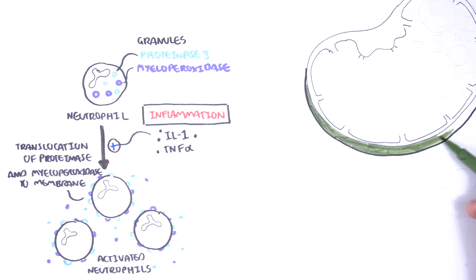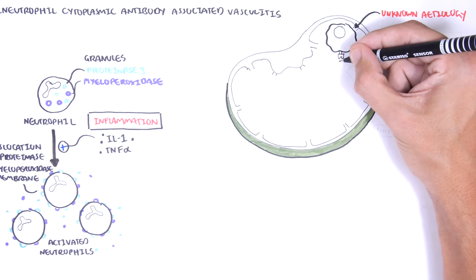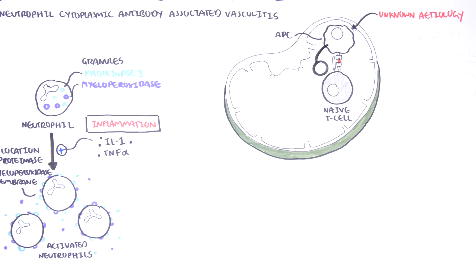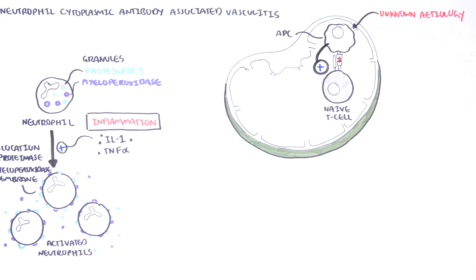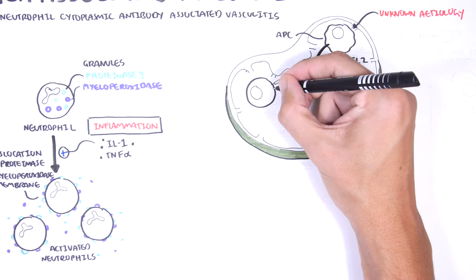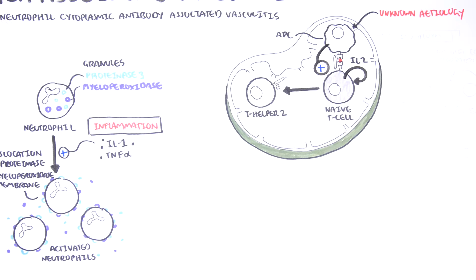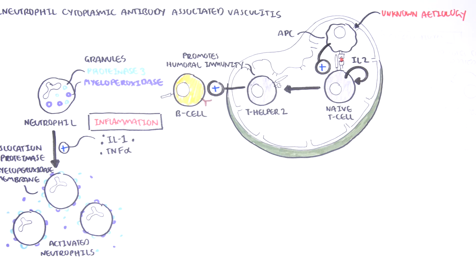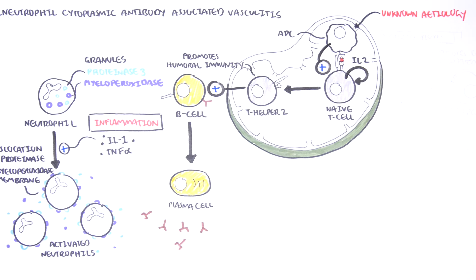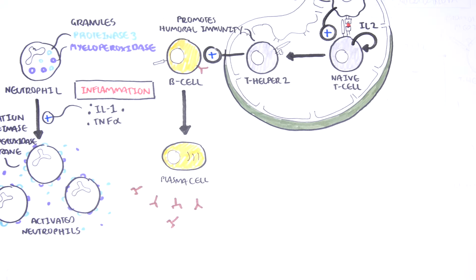ANCA antibodies are produced by plasma cells through an unknown cause, possibly infection initially. Antigen-presenting cells activate the naive T cells, which reside in lymphoid tissues. The naive T helper cells rely on interleukin-2 for activation and will stimulate T helper 2 cells. T helper 2 cells stimulate the humoral immune response — the antibody-mediated immune response — activating B cells to become plasma cells. Plasma cells produce ANCA, which targets certain proteins in the cytoplasmic granules of neutrophils and monocytes.